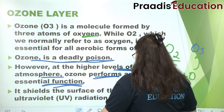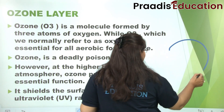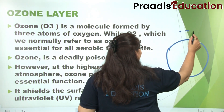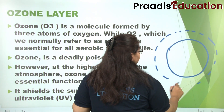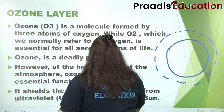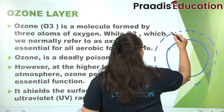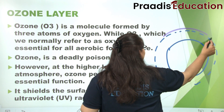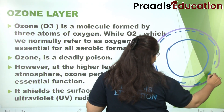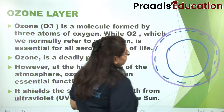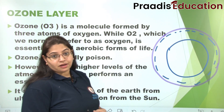So if this is our Earth, then this is our atmosphere. And in the atmosphere, above the upper strata, this ozone is present and it has created a whole shield or covering in our atmosphere.